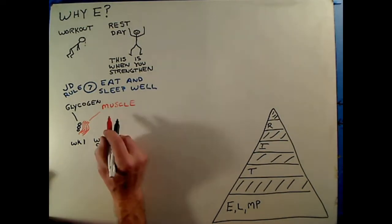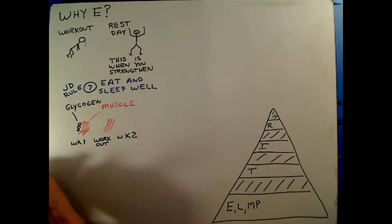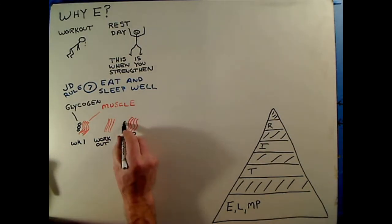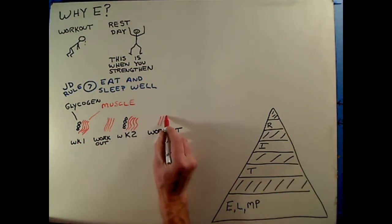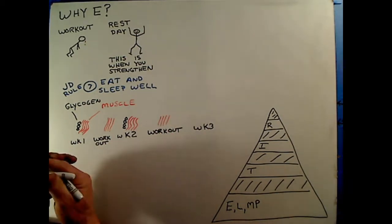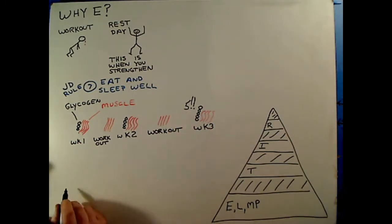So on week one, you have some glycogen, and you do a workout, and you drive that glycogen down to zero. And then week two, your body responds and now you have four units of glycogen. You do a workout, and it goes back down to zero. And then week three, your body says, oh, you need more glycogen. Look at you, you're up to five.